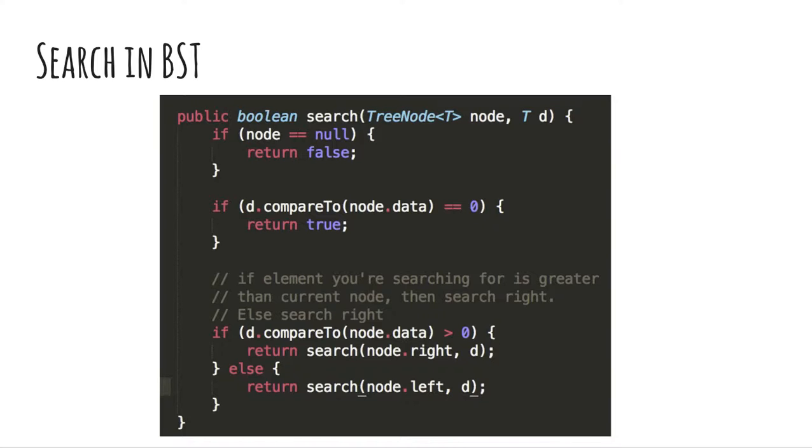This is a recursive method for searching for a specific element in a binary search tree. The important difference between this method and the method for searching in the regular binary tree is the compare method. Depending on whether the target data is greater or less than the current node you are looking at, you will either search left or right. You will never need to search both left and right.